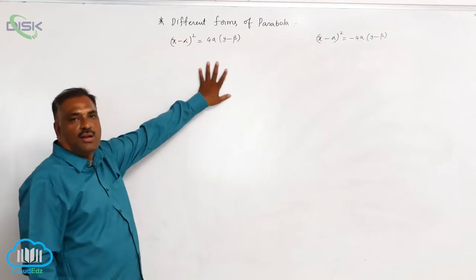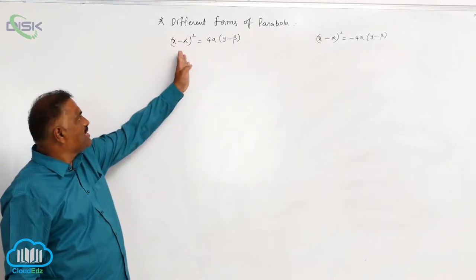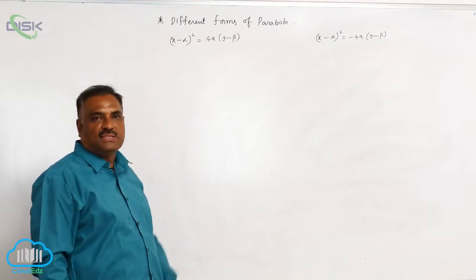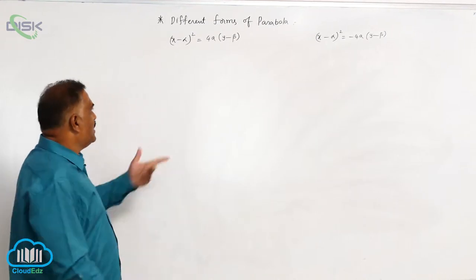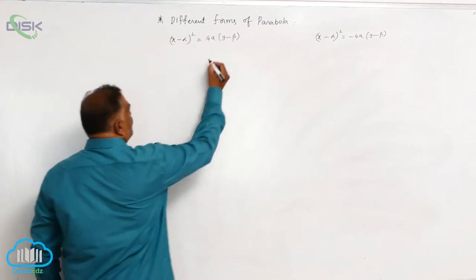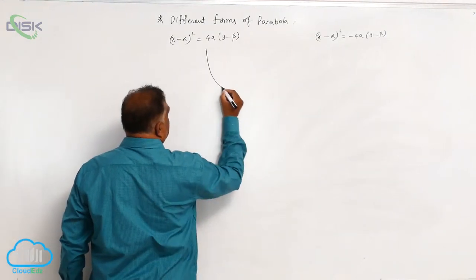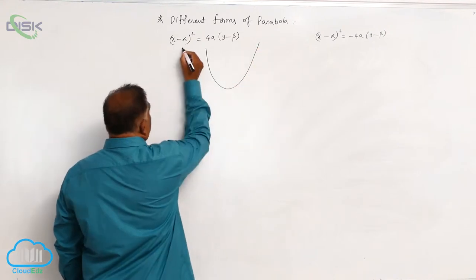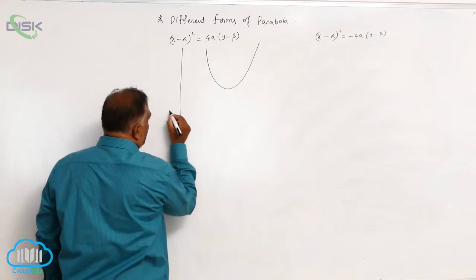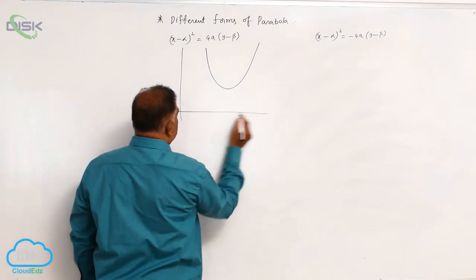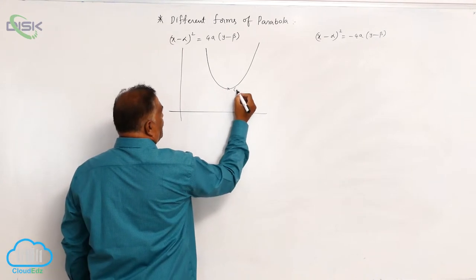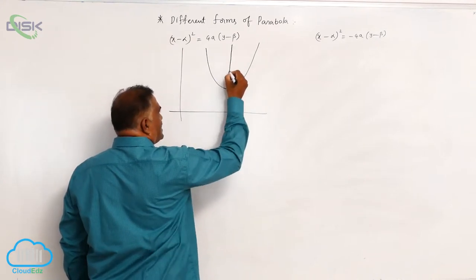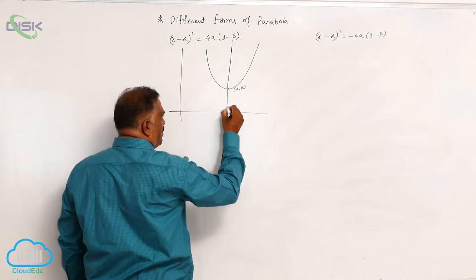We will discuss one more parabola: (x minus alpha) whole square equal to 4a into (y minus beta). It is similar to an upward parabola. It is going to be based on the shifted coordinate axis. You can see the vertex is at alpha comma beta. This is the axis of the parabola.